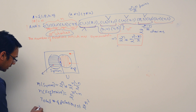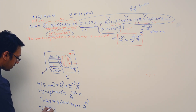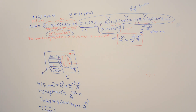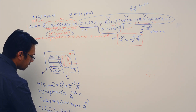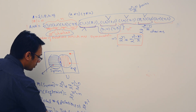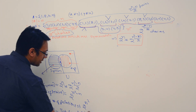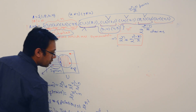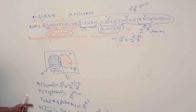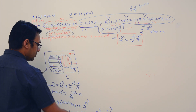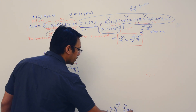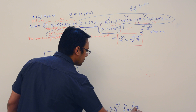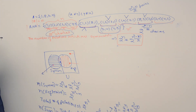The number of relations which are not symmetric is: total number of relations minus number of symmetric relations. That is, 2^(n²) − 2^n × 2^((n² − n)/2). So these many relations are there which are not symmetric.